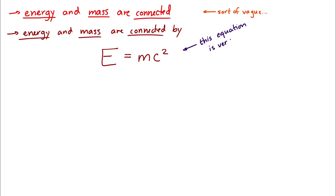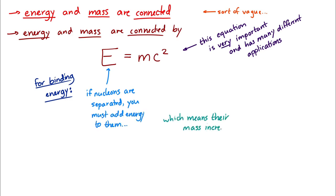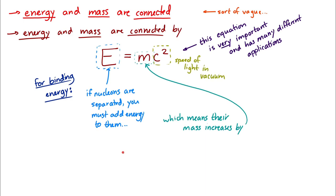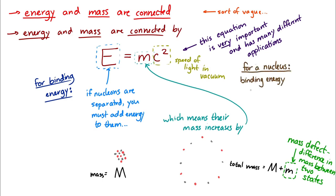Energy and mass are connected by E = mc². When nucleons are separated, you add energy to them, which means their combined mass increases by a corresponding amount. Here, c is the speed of light. If a nucleus has mass M, and the separated nucleons have total mass M + m, then that little m is called the mass defect — the difference in mass between the two states. The binding energy E equals the mass defect times c squared.